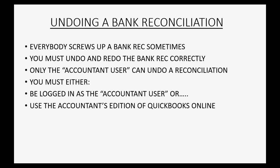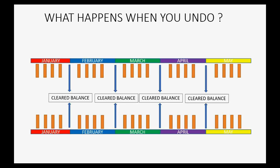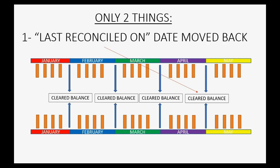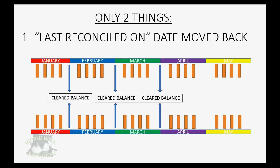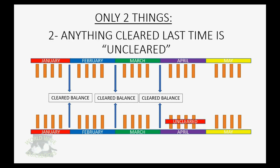For many of you following this course, when you signed up you signed up for the accountant's edition, so you will be able to undo. When you undo a reconciliation, only two things will change: first, the last reconciled-on date will be moved back to the previous month, and second, anything that was marked cleared in the previous reconciliation is now uncleared and you have to start again fresh.